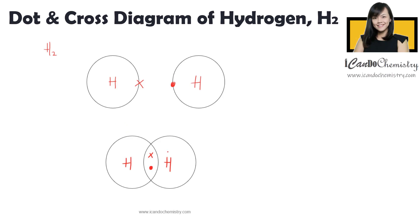So if I'm going to convert this dot and cross diagram into the structural formula, I'm going to write this down. This dash that I draw here is a single bond, meaning there's only one bond. And from here, you can actually see that one bond is formed when two electrons are shared.